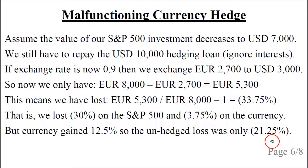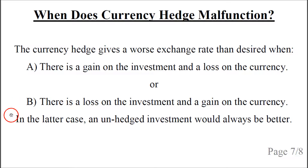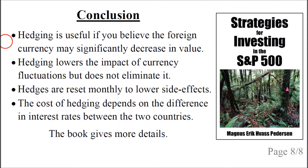The currency hedge malfunctions — giving a worse exchange rate than desired — when: (a) there is a gain on the investment and a loss on the currency, or (b) there is a loss on the investment and a gain on the currency. In the latter case, an unhedged investment is always better because the loss on the investment is somewhat offset by the gain on the currency.